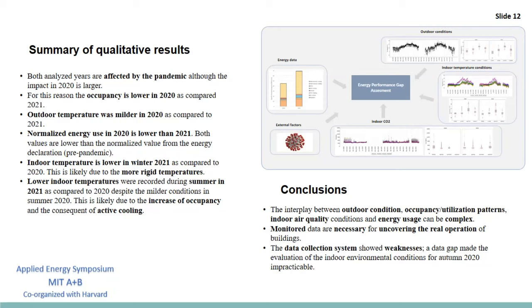Additionally, we can make some observations on the indoor air conditions. A first consideration is that the indoor temperature is lower in winter 2021 as compared to winter 2020. This is likely due to the more rigid temperatures during winter 2021. And the second consideration is that in summer 2021, lower indoor temperatures were recorded as compared to 2020, despite the milder conditions in summer 2020. And this is likely due to the increased occupancy and the consequent use of active cooling. And this shows that by linking energy along with indoor and outdoor conditions, we get a better picture of how the building is operating and the quality of the indoor air delivered and the corresponding energy use required.